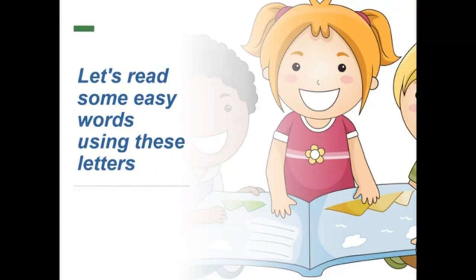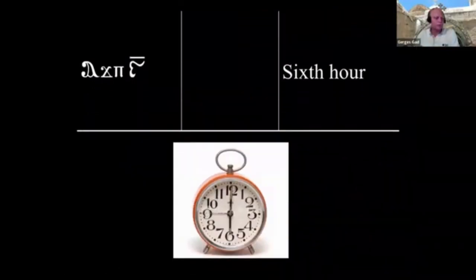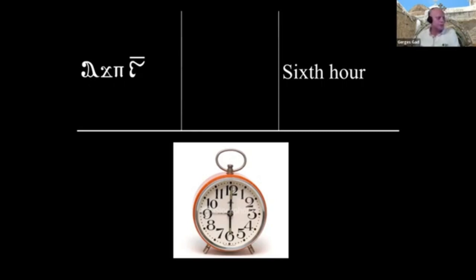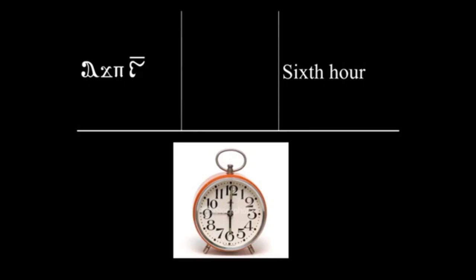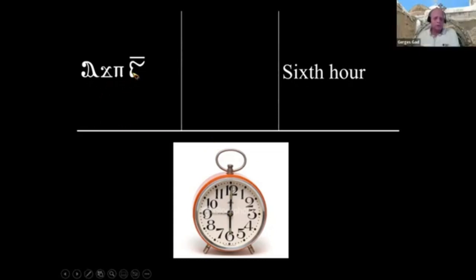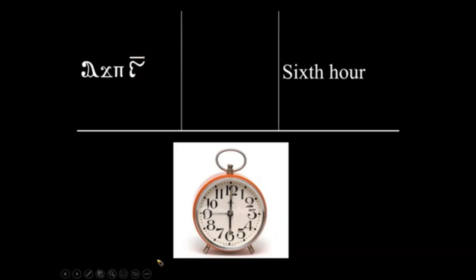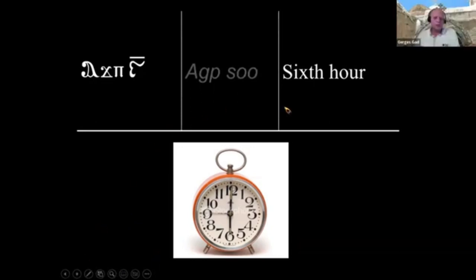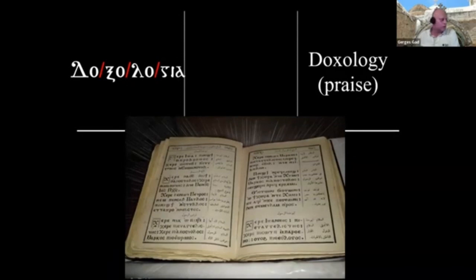Let's practice reading words together. Please raise your hand, and once we finish with volunteers we'll call on others. Anthony, you have your hand up — say the first word. 'Ag-Su' — very good. This uses the letter Sue we learned today. 'Ag-Su' means 'the sixth hour' — 'ag' means 'hour' and 'Sue' is six. Thank you Anthony.